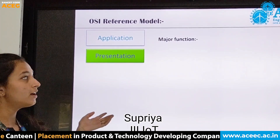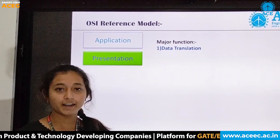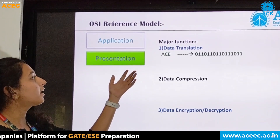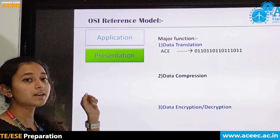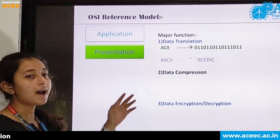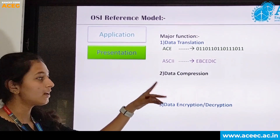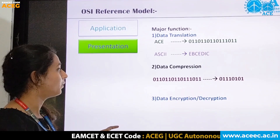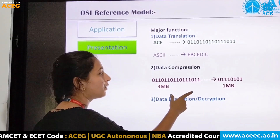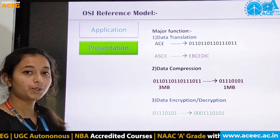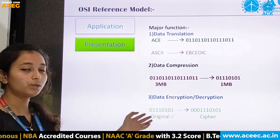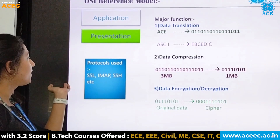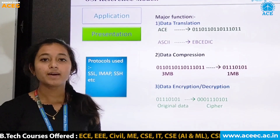The next layer is the presentation layer. Its major functions are data translation, data compression, and data encryption and decryption. In data translation, data from the application layer is converted to binary format and ASCII values. Data compression reduces the size of data — for example, 3MB reduced to 1MB. Data encryption converts original data to cipher to maintain integrity and provide security. Protocols used include SSL, IMAP, and SSH.